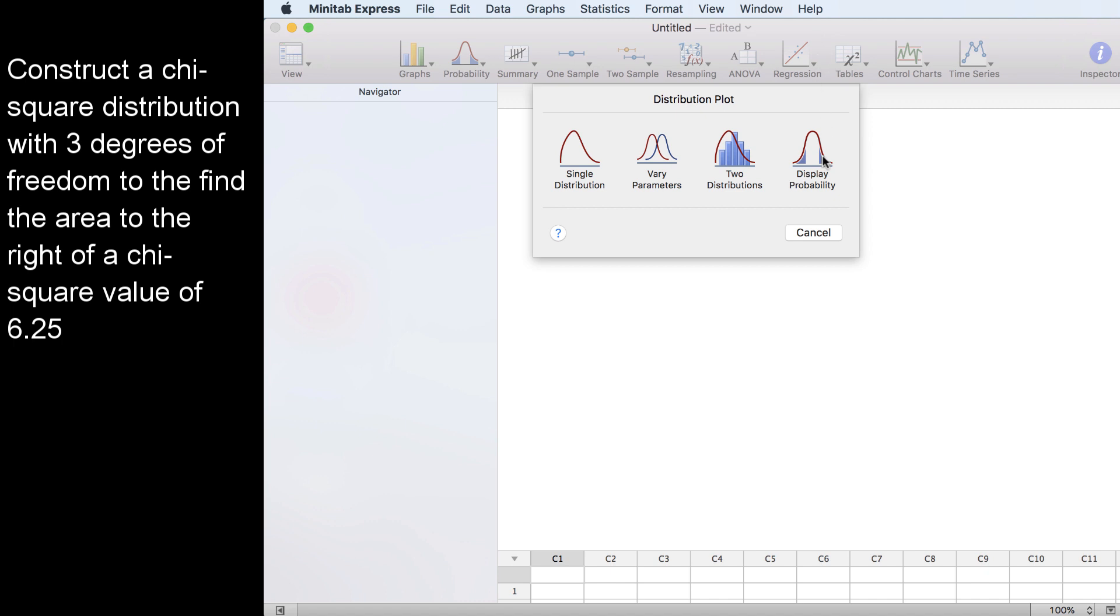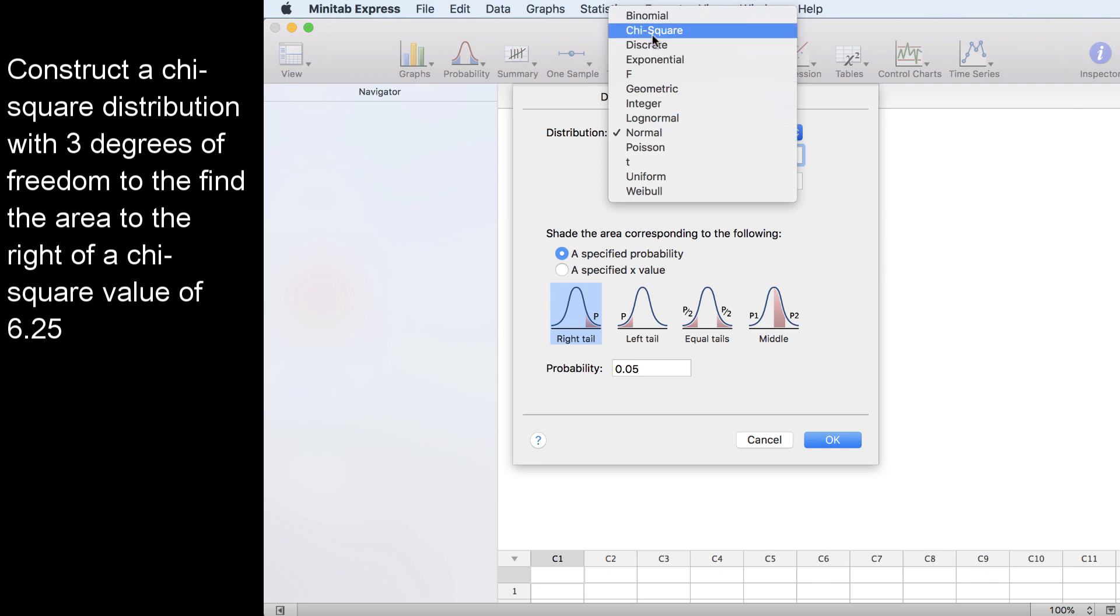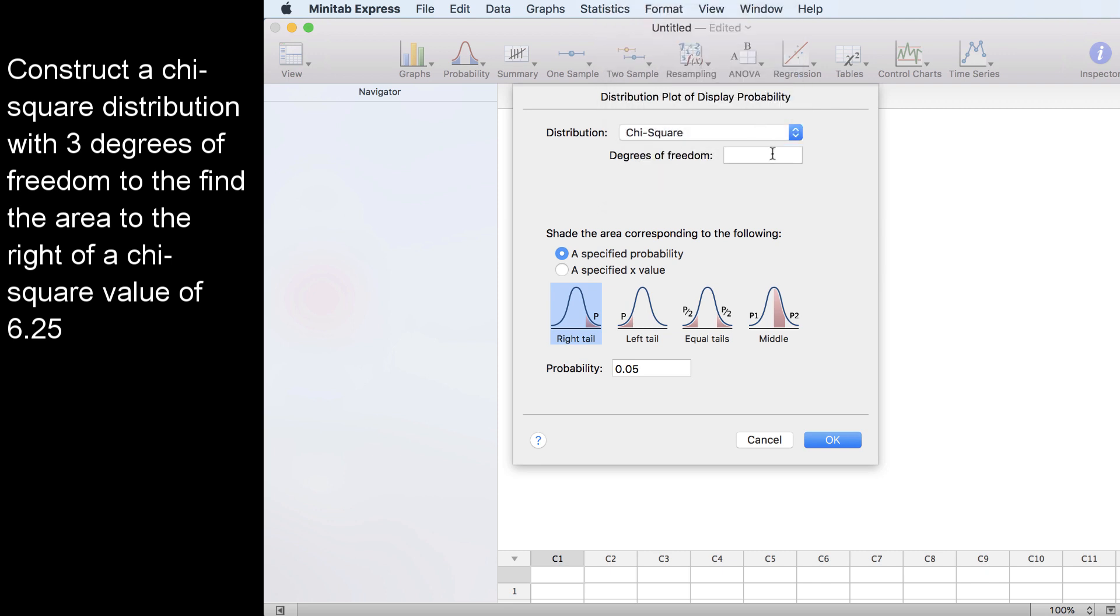We want to display a probability for a chi-square distribution with three degrees of freedom. We were given a chi-square value, and we want to find the area to the right of 6.25.